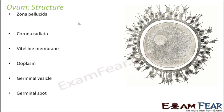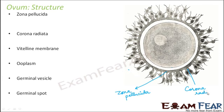Zona pellucida is this layer which is present here. Corona radiata is the outermost layer — this is corona radiata. Inner to corona radiata is the zona pellucida layer. Inside that is the vitaline membrane. Sometimes the space between the vitaline membranes is also known as the perivitelline space.